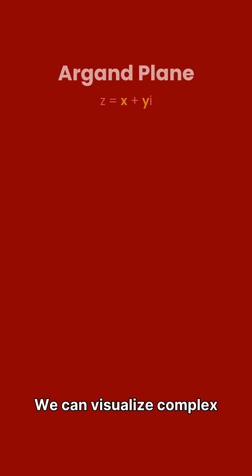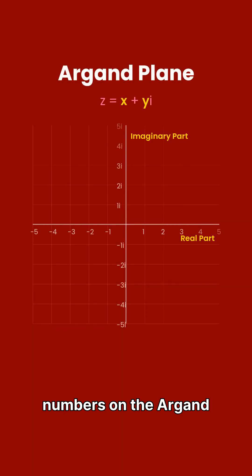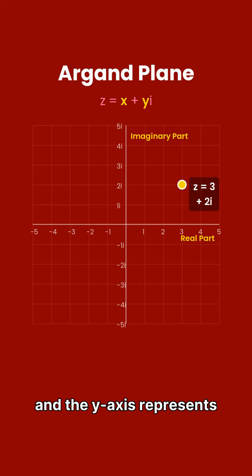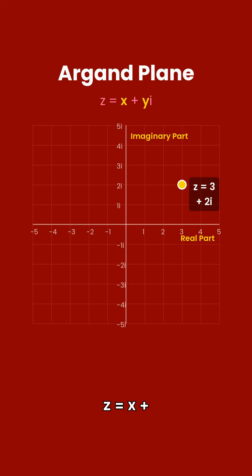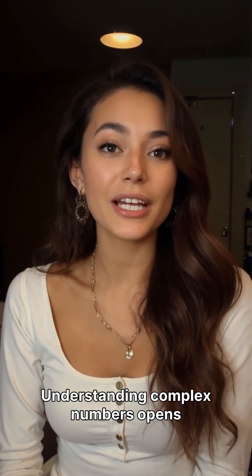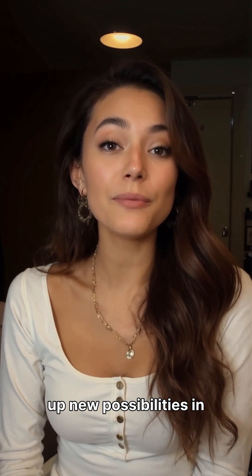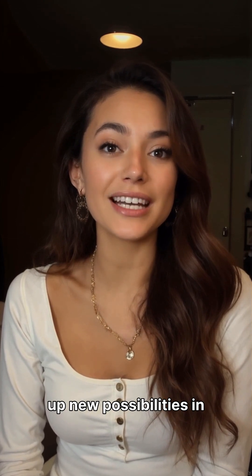We can visualize complex numbers on the Argand plane, where the x-axis represents the real part and the y-axis represents the imaginary part, treating z equals x plus iy as a point. Understanding complex numbers opens up new possibilities in mathematics and beyond. Keep exploring!